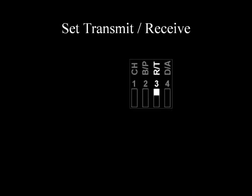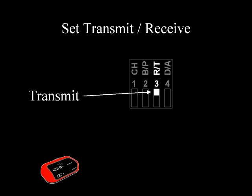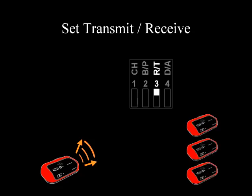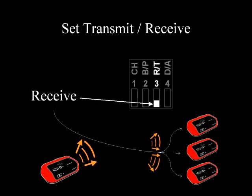Switch 3 chooses whether a pipeline unit is a transmitter or a receiver. On the transmitter unit, take Switch 3 and set it to the top — this marks that unit as the transmitter. On all of the receiver units, take Switch 3 and set it to the bottom — this marks those units as the receivers.